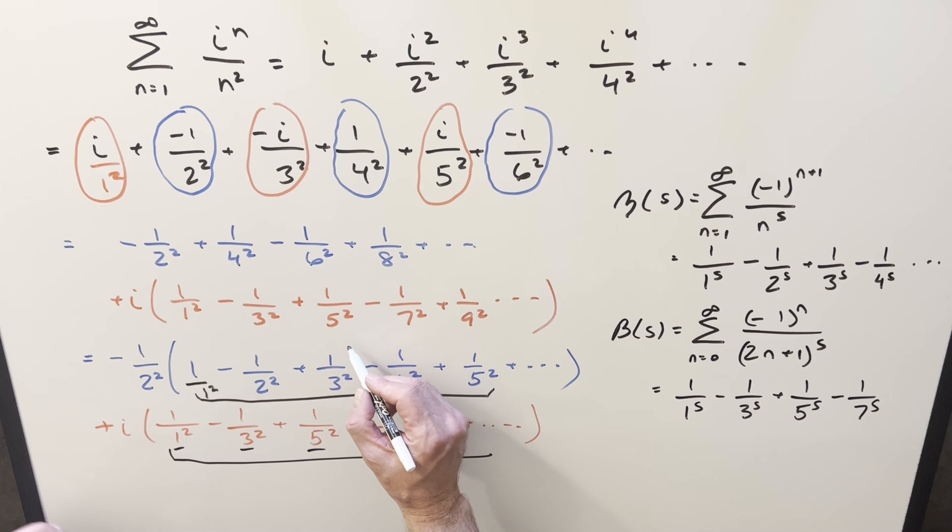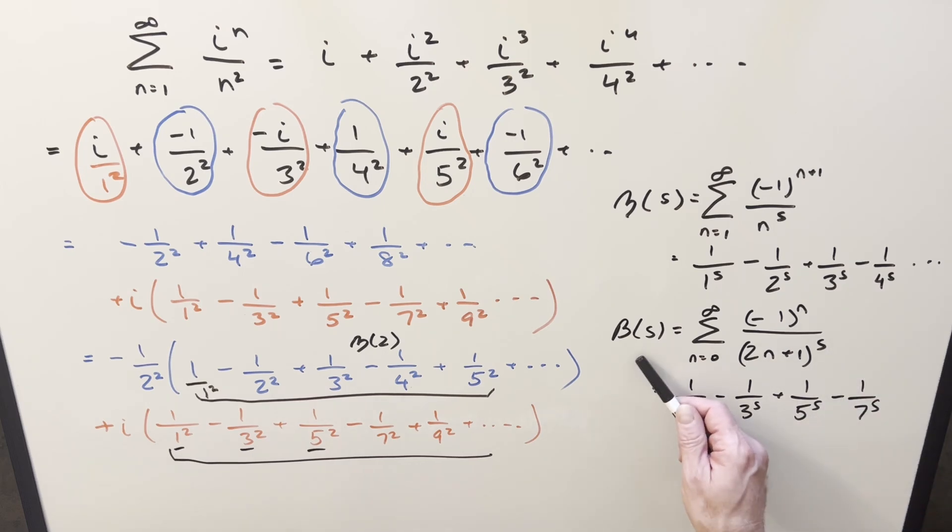So what we can do is say that this right here is just going to be eta at 2. And then for our imaginary part, we can use this second formula for the Dirichlet beta function at s. Same thing, 2n plus 1. This is going to be all odd terms here. Okay, alternating sign with the minus 1 to the n here. The only thing we need to deal with is the exponent. Everything here is squared. Here it's s, so our input on this is just going to be a 2. So all this here is going to be Dirichlet beta function at 2.